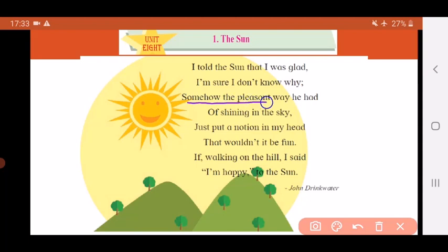Somehow the pleasant way he had of shining in the sky. How the sun comes up every morning and shines happily in the sky. So pleasant way means the nice way that the sun comes up in the morning and keeps shining brightly in the sky.